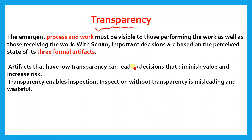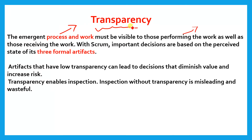The first pillar is transparency. The name indicates it — transparency means all processes of Scrum should be visible or transparent. The emergent process and work must be visible to those performing the work as well as those receiving the work. This question might come in your exam — whether it is the emergent process, the emergent work, or both process and work. Everything should be transparent, clear, and visible.